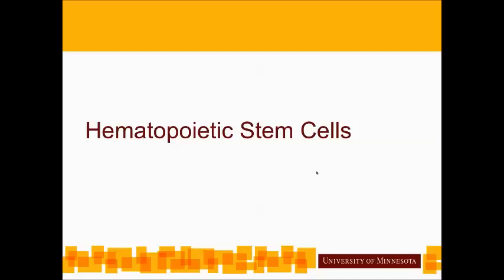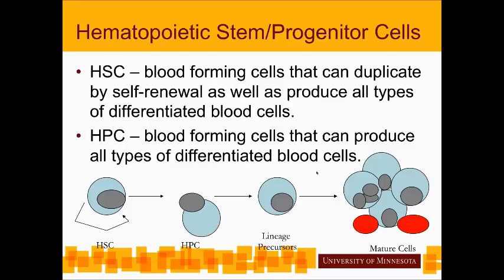Hematopoietic stem cells are also called progenitor cells, HSC, HPC, or HSPC — for transplant purposes, these terms refer to the same thing. Stem cells are blood-forming cells that can duplicate and produce all types of blood. Progenitors don't necessarily duplicate themselves but do produce all different blood cell types. From HSCs, they become progenitors, then blood cell precursors, then mature blood cells — a pathway that can be broken apart in great detail involving many different lineages and growth factors.